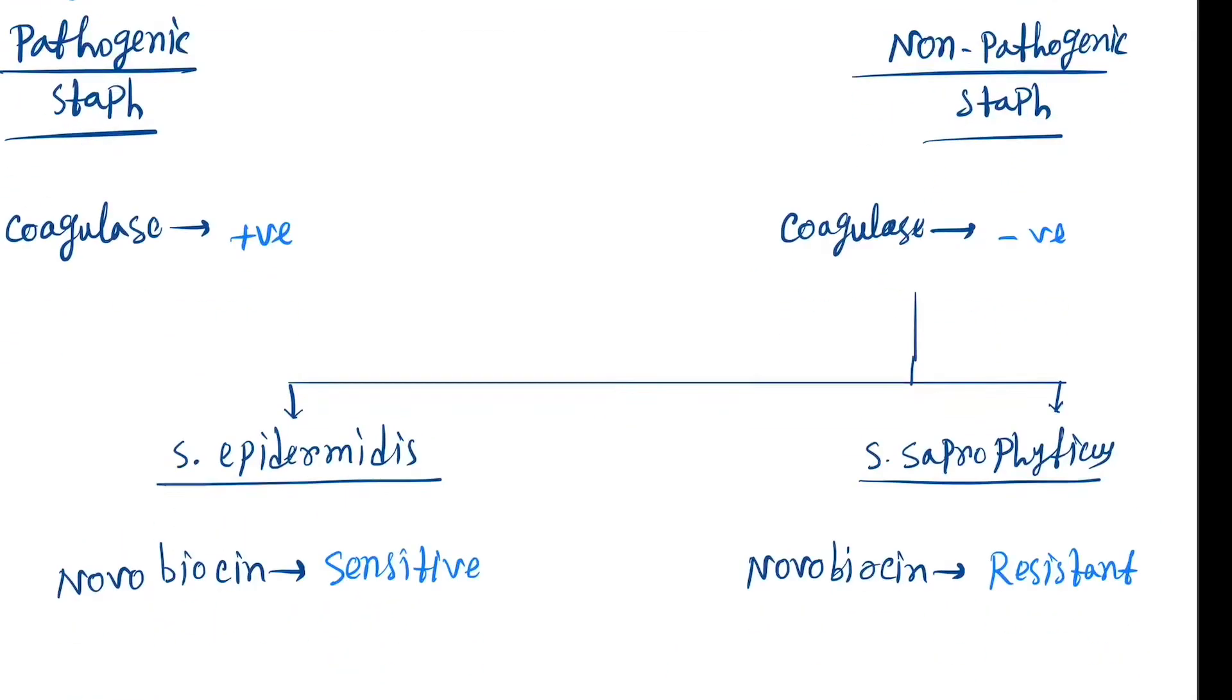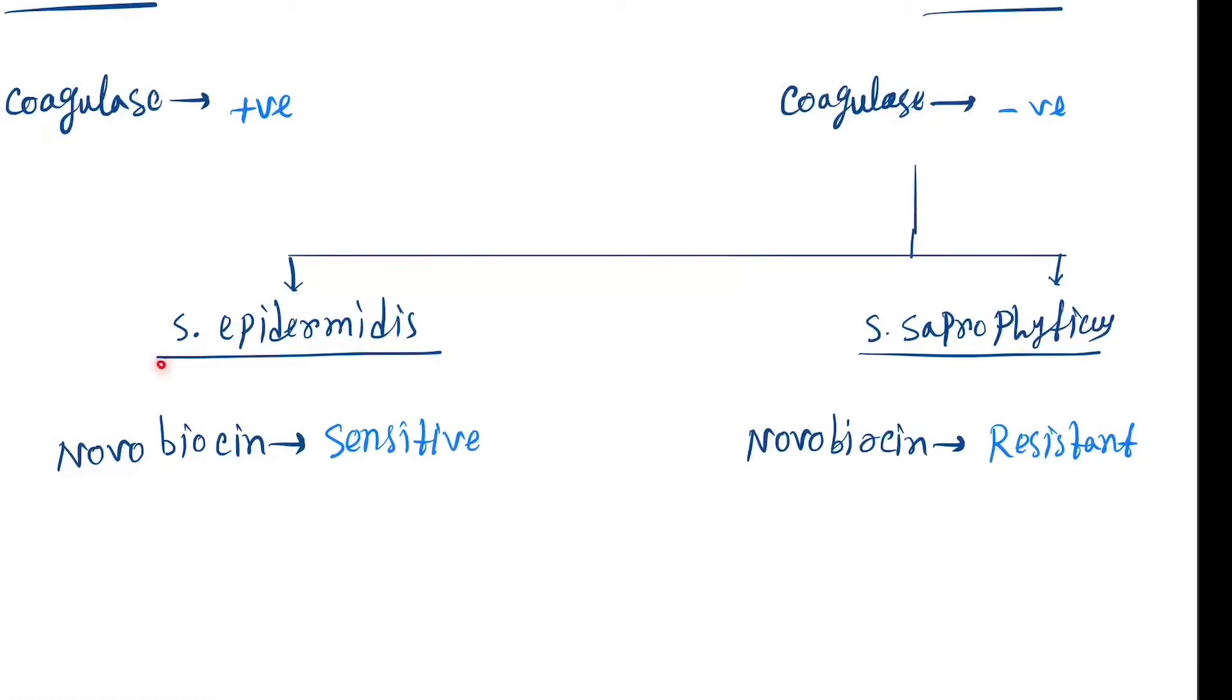Coagulase negative staphylococcus are divided into staphylococcus epidermidis and staphylococcus saprophyticus. How to differentiate? Epidermidis is novobiocin sensitive and saprophyticus is novobiocin resistant.